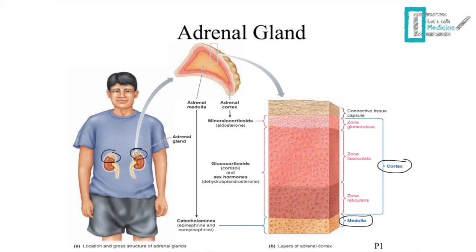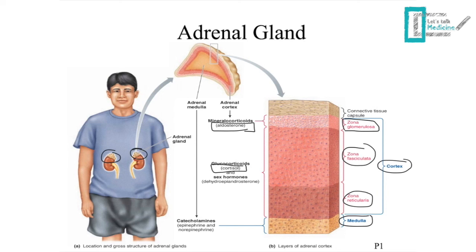The cortex itself is divided into three distinct functional layers. The most superficial is the zona glomerulosa, right underneath the capsule of the adrenal gland, and it secretes aldosterone, which is important in regulating blood pressure. Then we have the larger, thicker zona fasciculata, which secretes cortisol. The last layer is the zona reticularis, which secretes sex hormones in both males and females. Lastly, the medulla secretes the catecholamines — epinephrine.